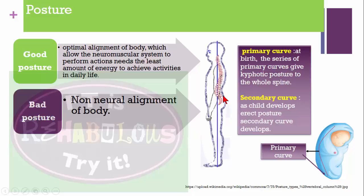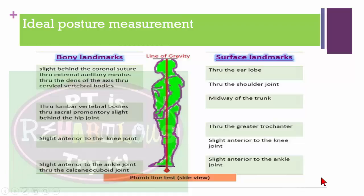When we are born, we have a primary curve — the thoracic curve and the sacral curve. These are called primary curves. As the child develops an erect posture, secondary curves develop. The secondary curves include the cervical curve and the lumbar curve.